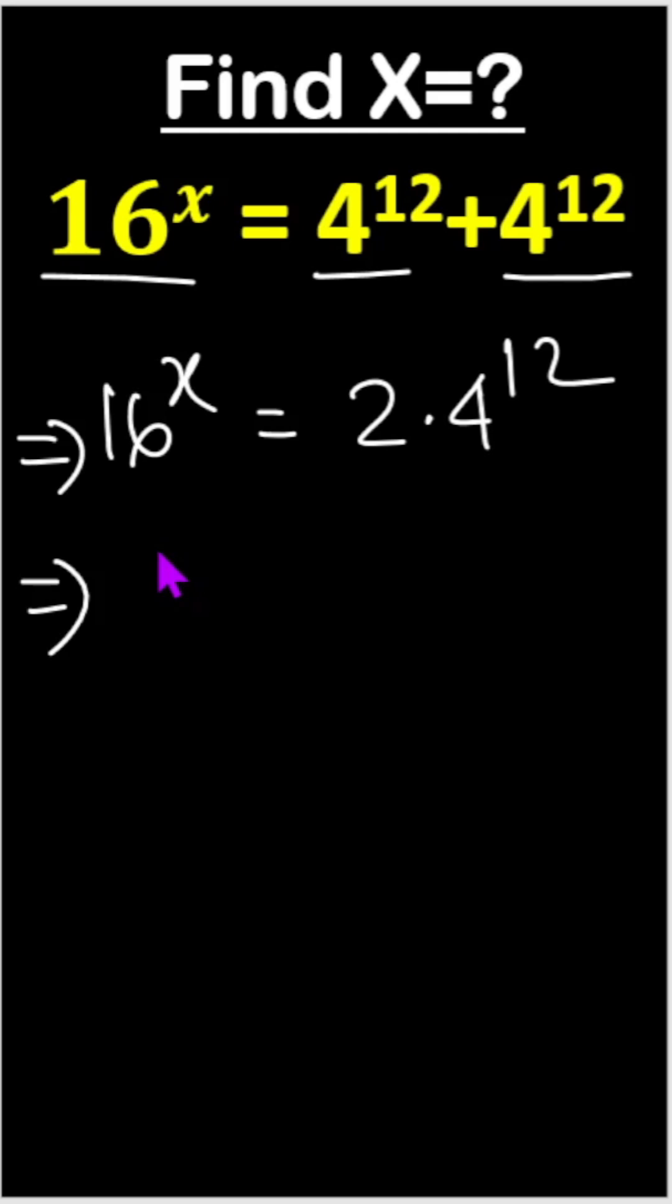And this 16, we can write 2 to the power 4, and here is x, and 2 to the power nothing means 2 to the power 1, and here is 4 to the power 12. So this is 2 to the power 1 times 4 means 2 squared times 12.